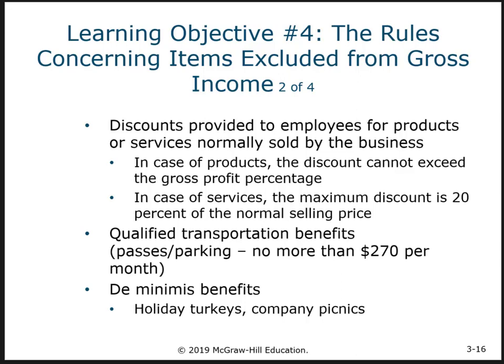Qualified transportation benefits — bus passes, parking spaces, and things that facilitate employees coming to work — are excludable up to $270 per month. If the value provided exceeds $270 per month, the additional amount must be included in income. For example, if you provide $300 per month in transportation benefits, the employee would have to include $30 per month in income, because the maximum that can be excluded is $270 per month.